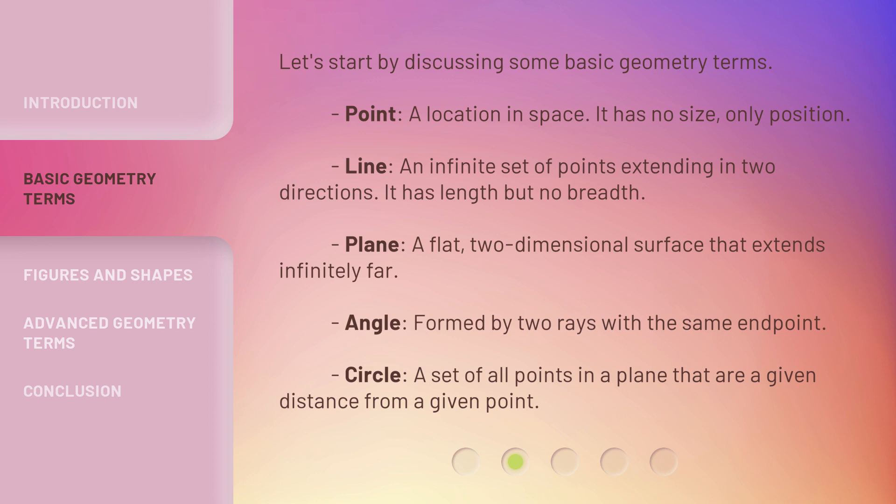Point: A location in space. It has no size, only position. Line: An infinite set of points extending in two directions. It has length, but no breadth. Plane: A flat, two-dimensional surface that extends infinitely far. Angle: Formed by two rays with the same endpoint. Circle: A set of all points in a plane that are a given distance from a given point.